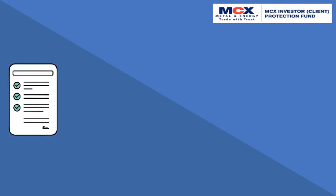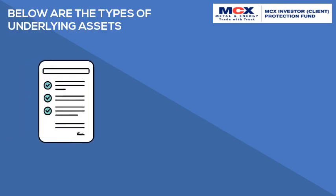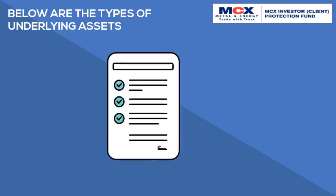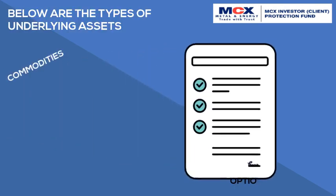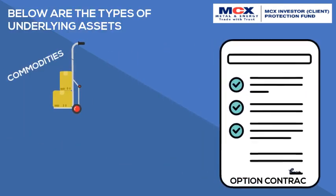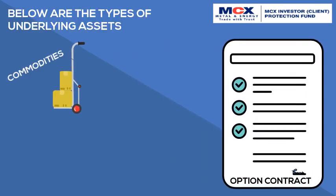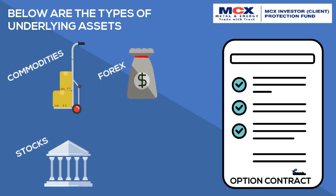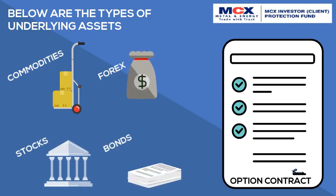There are various types of underlying assets. The underlying assets could be commodities, commodity futures, forex, stocks, stock indices, debt instruments, or bond indices.